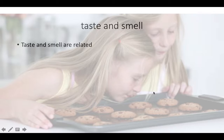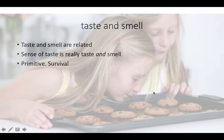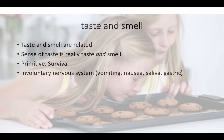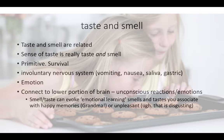Taste and smell are related. The sense of taste is really a combination of taste and smell. Both of them are among our more primitive senses, related to unconscious survival. They're connected to our involuntary nervous system — vomiting, nausea, salivation, the digestive system, gastric juices — and they're connected to emotions. Smells and tastes can invoke emotional learning; you associate them with, like, grandma and the smell of her kitchen and happy memories, or unpleasant ones.